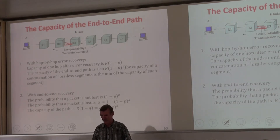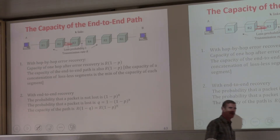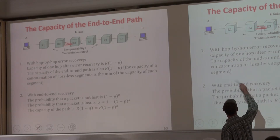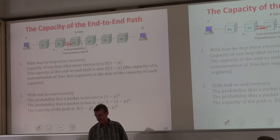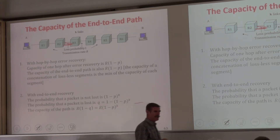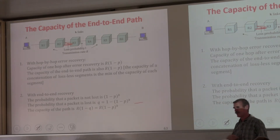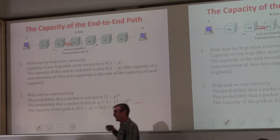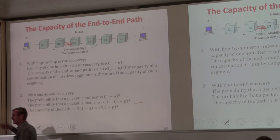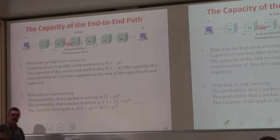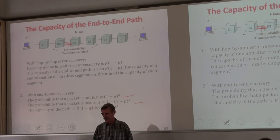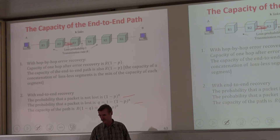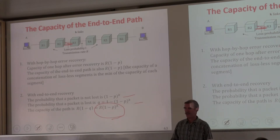With end-to-end recovery, we look at the concatenation of links as one link with a given error probability Q. The probability a packet is lost is 1 minus the probability it is not lost. Since losses are independent, the probability of not being lost equals the probability of not lost on link 1 AND not lost on link 2, etc. — which is (1 minus P) to the power K. So the capacity of the path is R times (1 minus P)^K. That formula is the capacity of the end-to-end path.